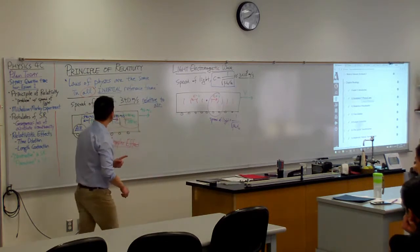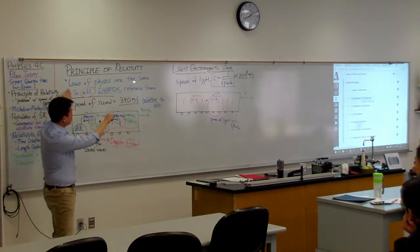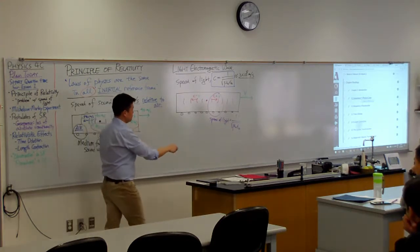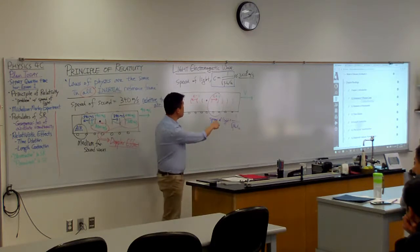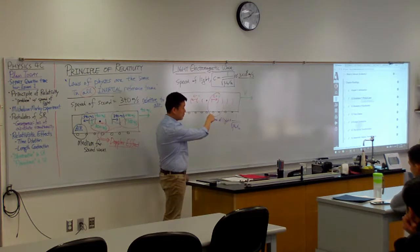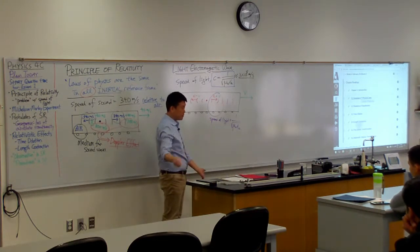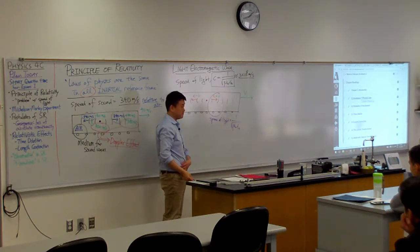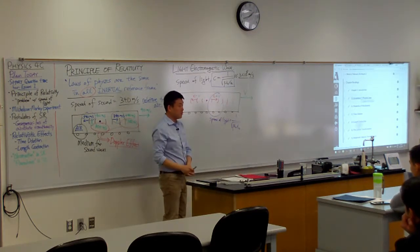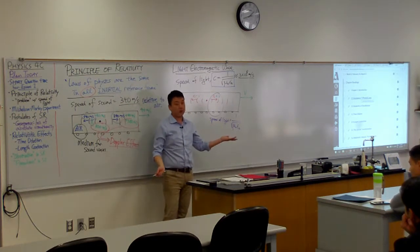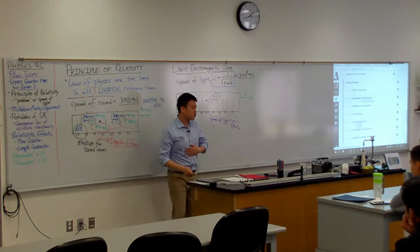So here's another way to phrase it. We say laws of physics are the same in all inertial reference frames. Laws of physics, according to Maxwell's equation, determines the speed of light. So if the laws of physics are the same in all reference frames, it must mean that speed of light given by this is the same in all reference frames. That's what it has to mean. If principle of relativity is correct, and I guess Maxwell's equations are correct.